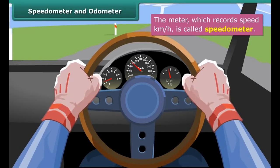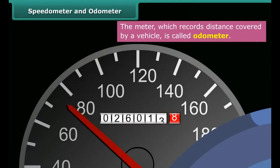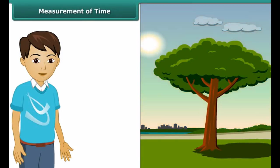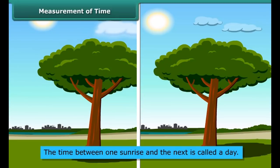Do the meters and indicators in front of the driver's seat of your father's car seem confusing? Straight beyond the steering wheel are two meters. The circular dial with needles and numbers is the speedometer. When the car is in motion, one needle points to a number showing the car's speed in kilometers per hour. There is also a rectangular box within the speedometer called the odometer. When the car is in motion, its digits increase, showing the total distance covered by the car.